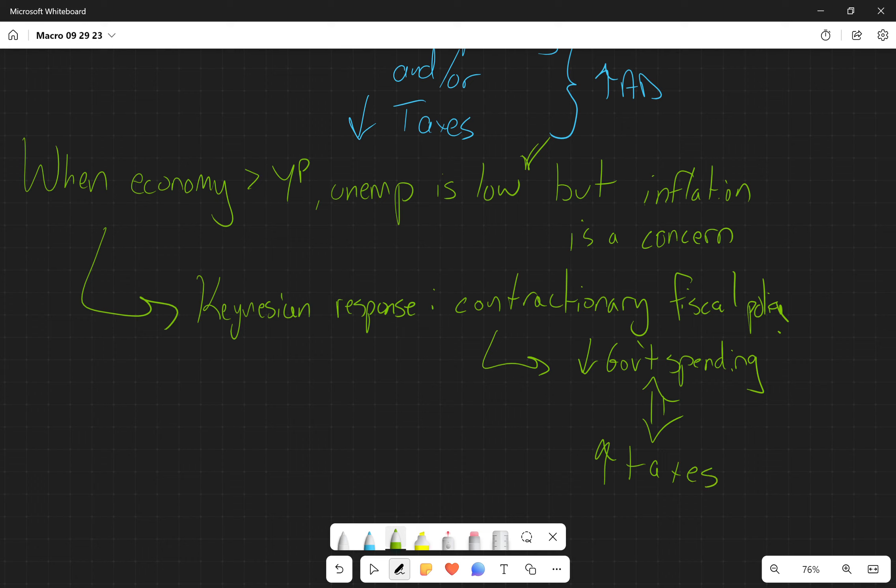Yes, Keynes says that when times are bad, increase government spending and decrease taxes. But he also says when we start to operate above potential GDP and unemployment is low but inflation pressures remain,